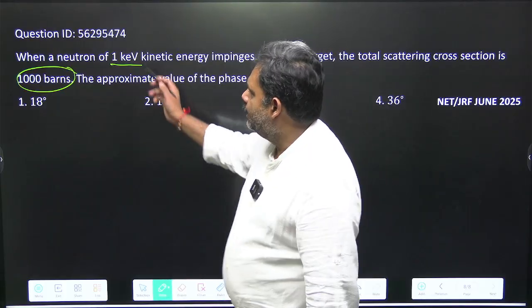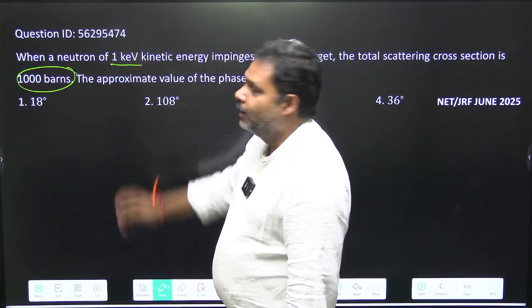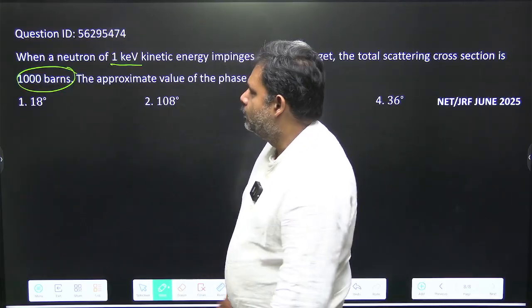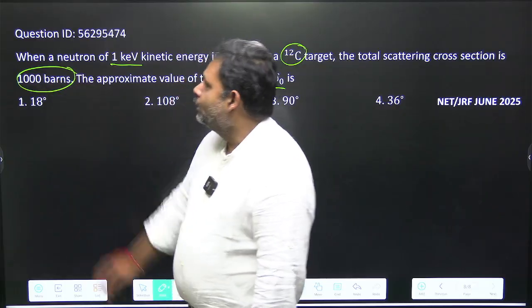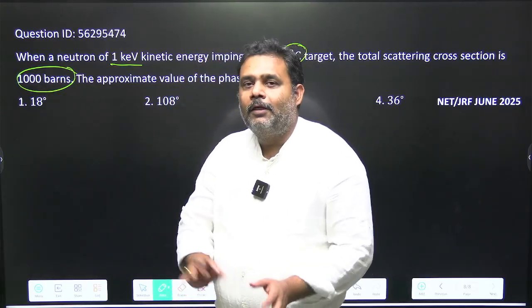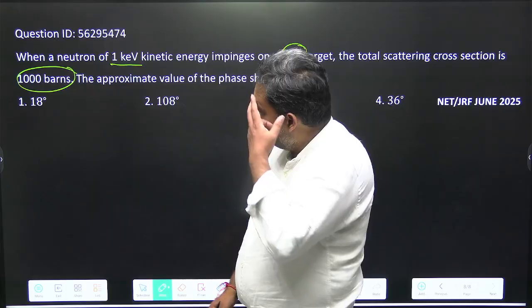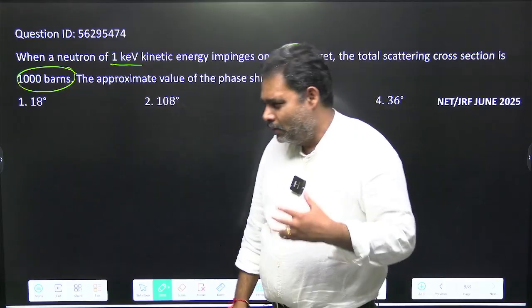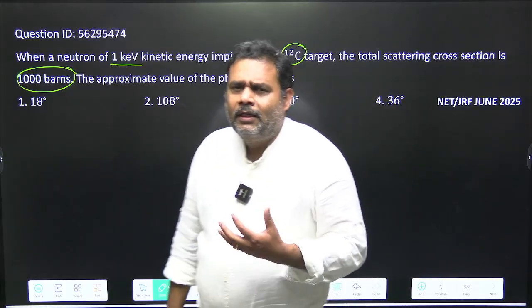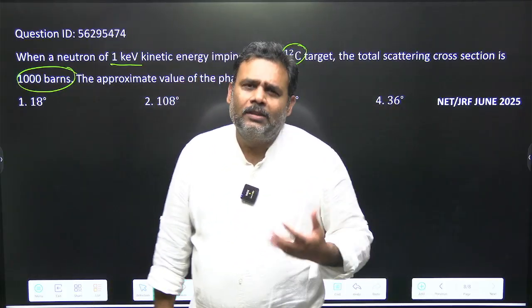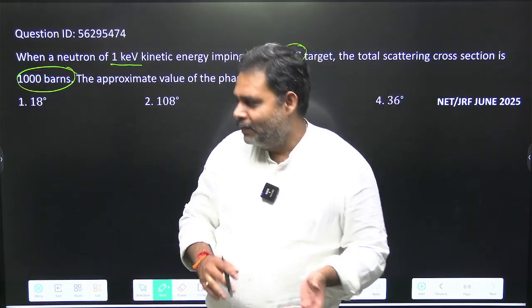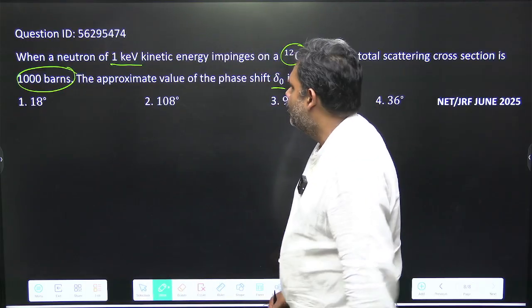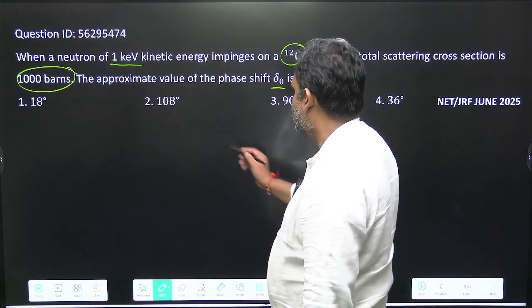First of all, you can see that the energy is given in kiloelectron volt, so you have to convert it into joules. And here 1000 barns is given, so you have to convert it into meter square. This is the first thing. They are just asking for delta naught, so you can assume that only S wave is excited, otherwise some other information must be there. Let us try to go for this particular question.